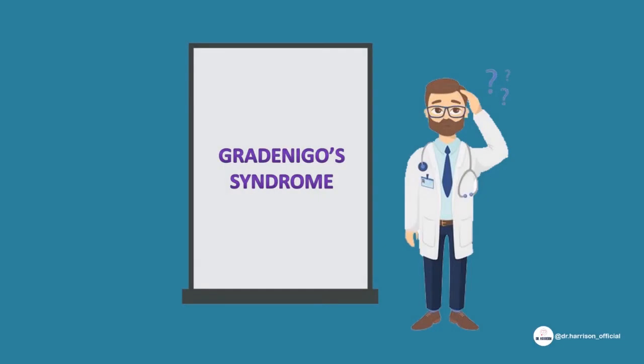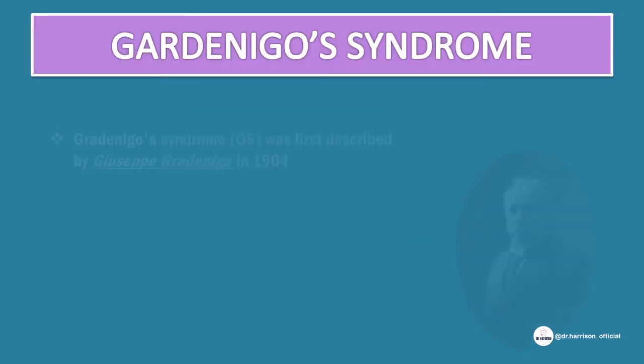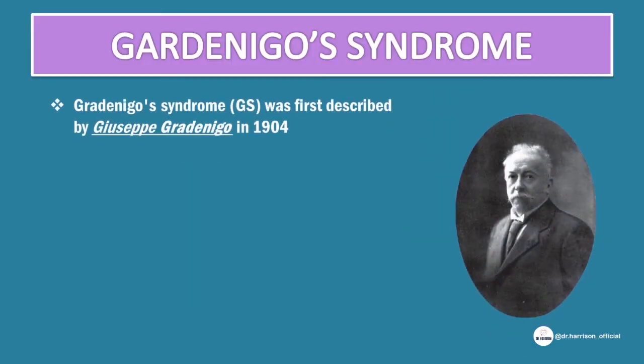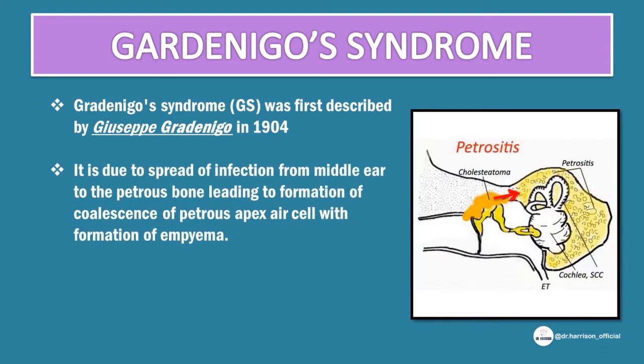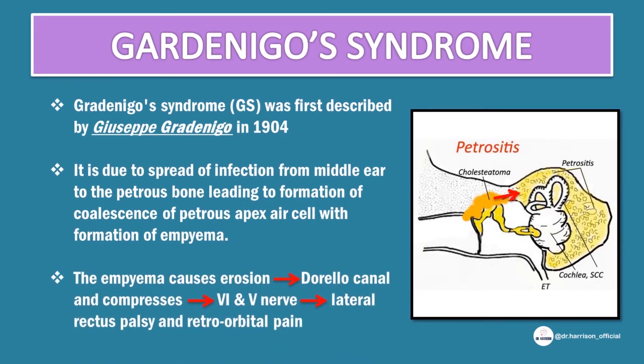It is Gradenigo syndrome. Gradenigo syndrome was first described by Giuseppe Gradenigo in 1904. It is due to spread of infection from the middle ear to the petrous bone, leading to formation of coalescence of petrous apex air cells with formation of an empyema. The empyema causes erosion and edema of Dorello's canal and compresses the adjacent abducens nerve, leading to lateral rectus palsy.